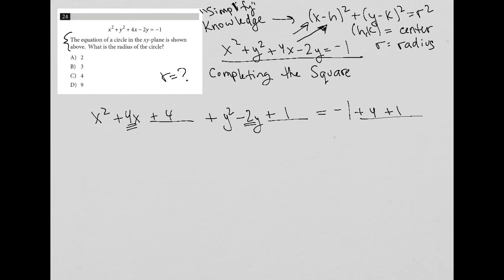So then I factor each of these trinomials, so this ends up being x plus 2 squared. The shortcut for this is always, this number will always be whatever half this term was here, right? So I get x plus 2 squared plus y minus 1 squared. So the same reason, half of negative 2 is negative 1, equals, well, negative 1 plus 1 is gone, so I have 4, so equals 4.